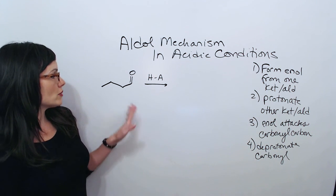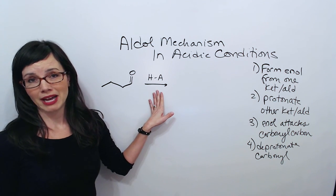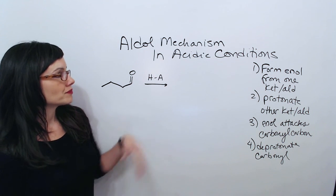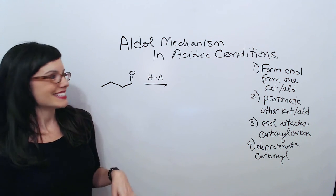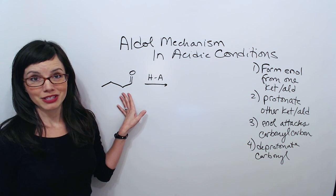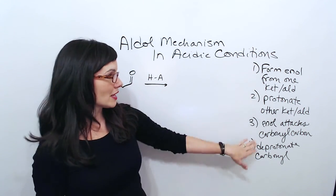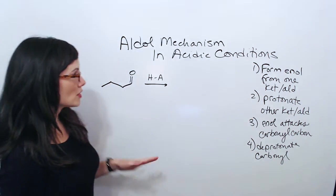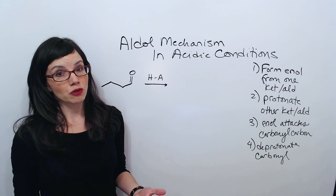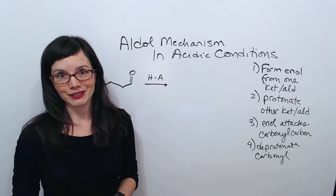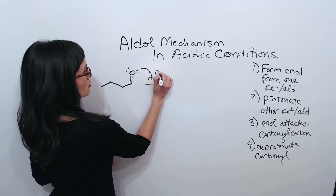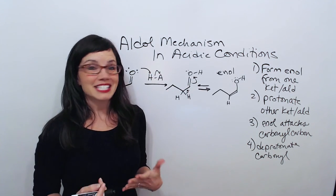When you see it in acidic conditions, what you'll see is a ketone or aldehyde in the presence of some acid — that may be HCl, H2SO4, or H3O+. Whatever acid you see, the first thing you're going to do is recognize that even though you may only see one ketone or aldehyde, there are plenty of these in solution. You're going to form an enol from one of them and protonate another one. If you have any trouble with forming an enol, go back and check out my enol and enolate video. So now we've formed our enol.